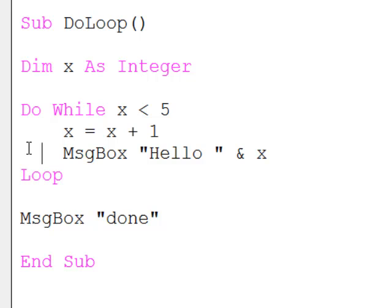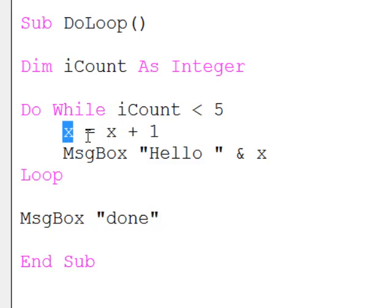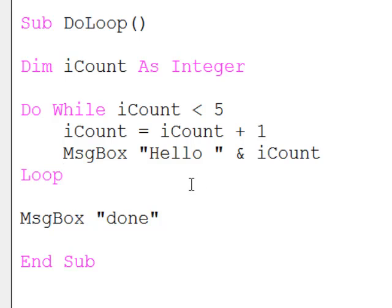One final point to make about do loops is it's probably not a good idea to call this variable x. I'm going to change its name to iCount. So wherever I see x, let's replace that. The simple reason for this is because I'm using this variable to count the number of times I pass through the loop, so iCount seems like a more sensible name than x.